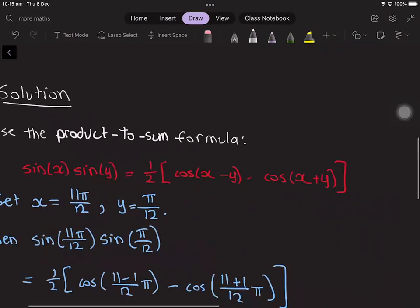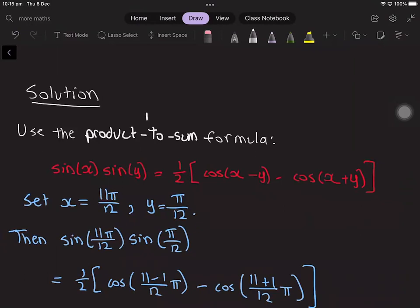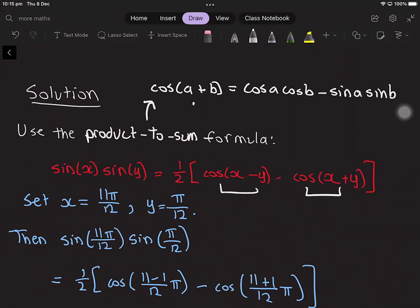And this formula can be derived using the cos angle addition formula, which is cos of a plus b equals cos a cos b minus sin a sin b. If you use this formula for these two expressions and you simplify, it will give you this left hand side.